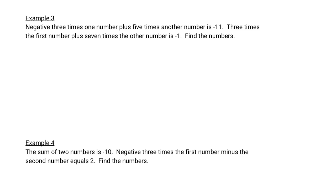These are my favorite. This is going to put together all the things we know about word problems and systems. First, write your equations. Negative 3 times one number, make that x. Plus 5 times another number, that's y. So negative 3x plus 5y is negative 11. That's one equation. Next equation: 3 times the first number, 3x, plus 7 times the other number, plus 7y is negative 1. Is always means equals. Find the numbers.